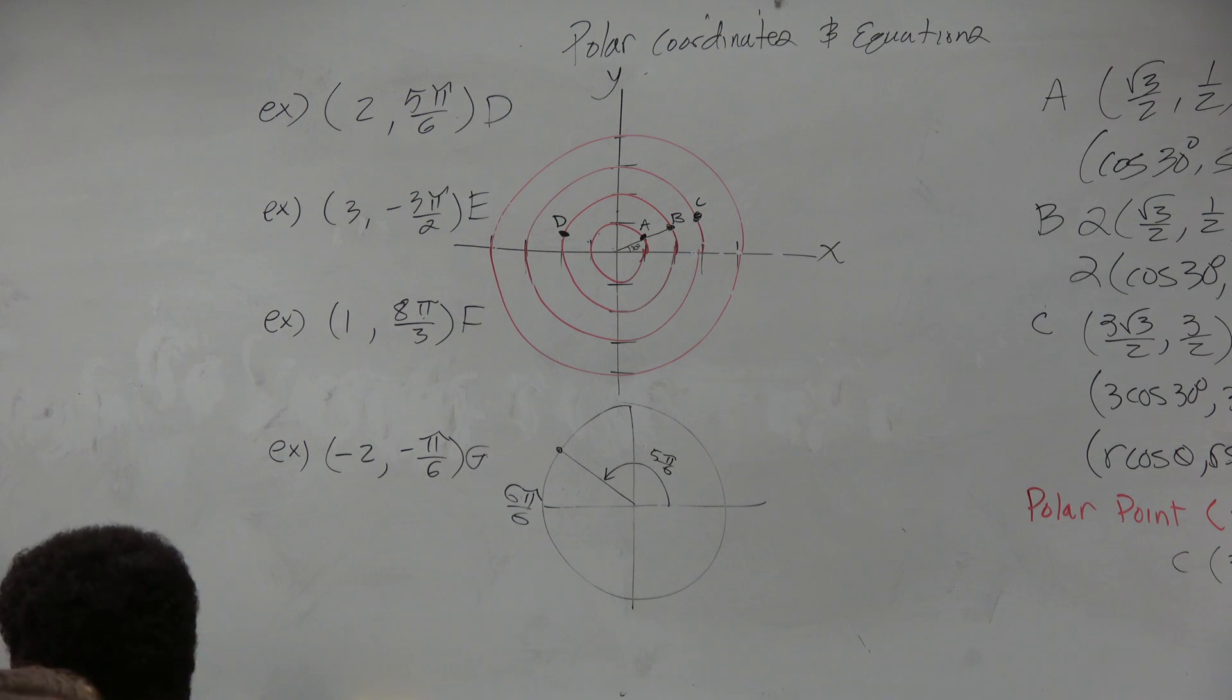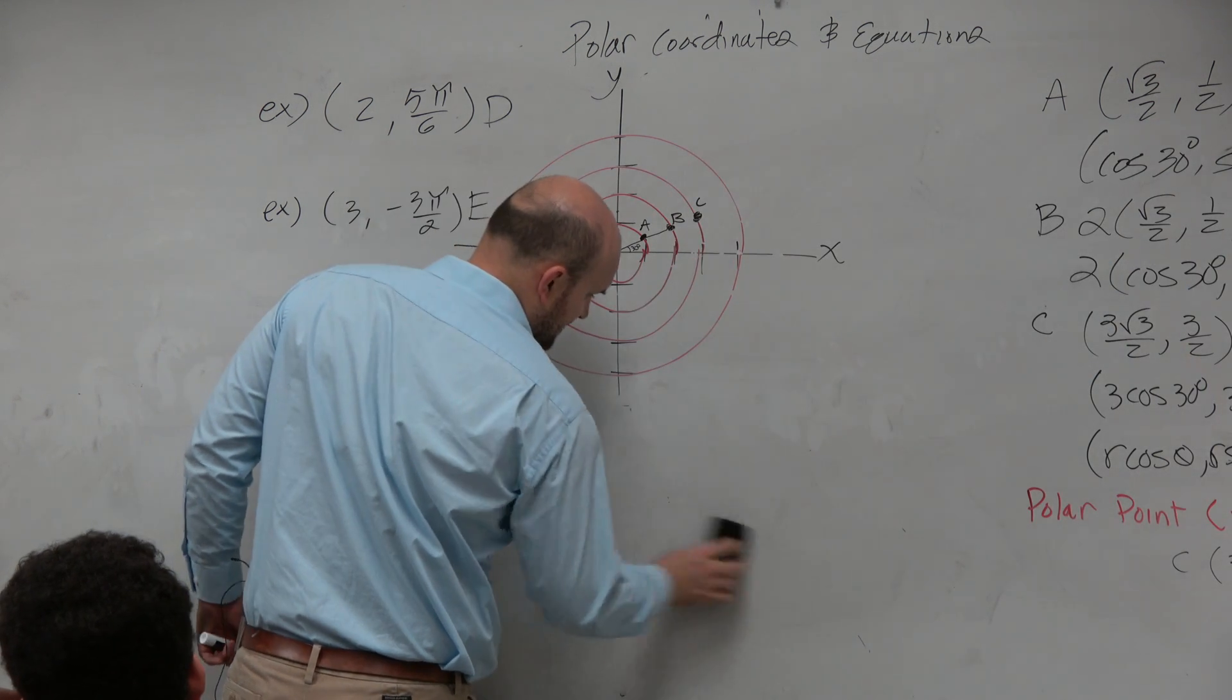Next point, 3 comma negative 3π over 2. Good, good problem. Because the axes ones I feel like gets a lot of students.